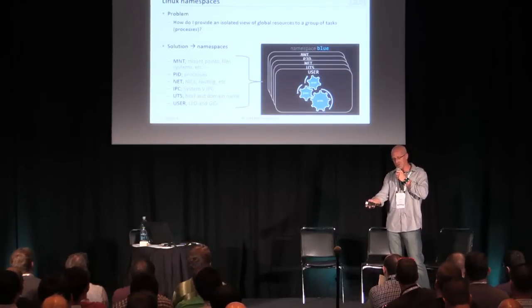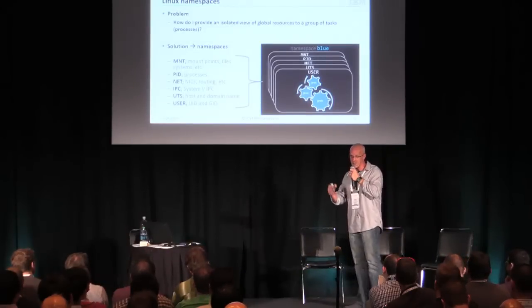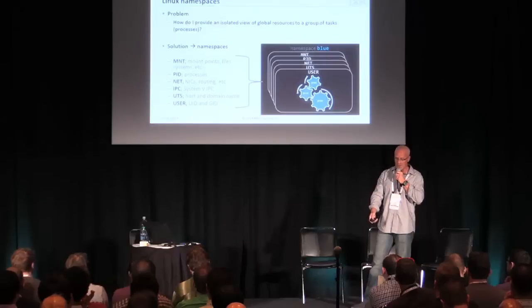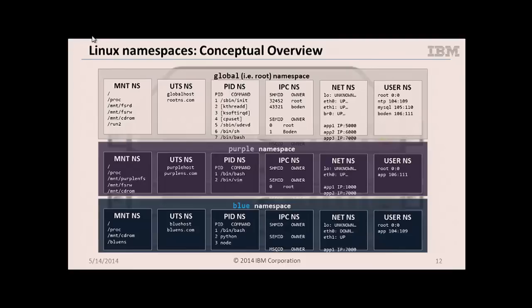The other namespaces work very similarly. You have one for network — you get your own network interfaces, your own routing tables, et cetera. Here's a colorful picture of how that might look. At the top we have the global or overall namespace — what you'd get without namespaces. Then we have a purple and a blue namespace. Each one, for example in the mount namespace, has their own set of mounts and they don't see mounts outside of the namespace. The same concepts apply to IPC objects, network, et cetera.